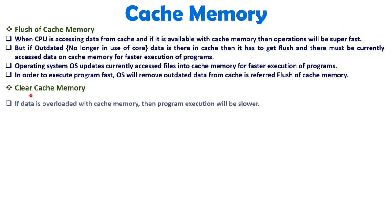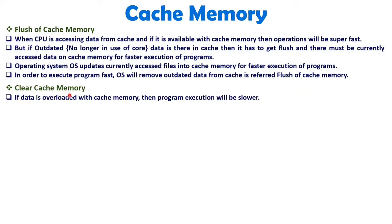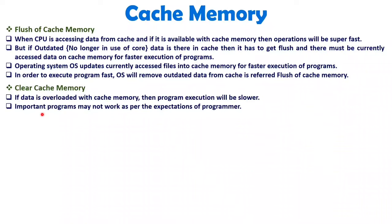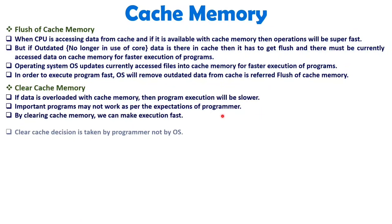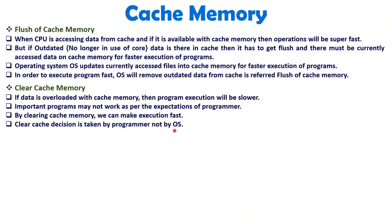When we talk about clearing cache memory, that is done by the user. If data is overloaded inside cache memory, program execution will be slower. The user will observe that execution of their application is slower than expected, and the programmer will clear the cache to make execution fast. This clear cache decision is taken by the programmer, not automatically by the operating system — though the OS also removes outdated files automatically. During execution of your main program, if the system is slow, as a programmer you can manually clear the cache through your operating system.